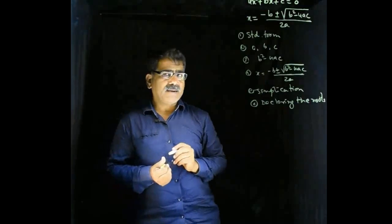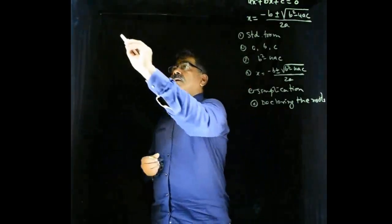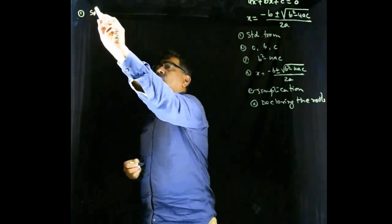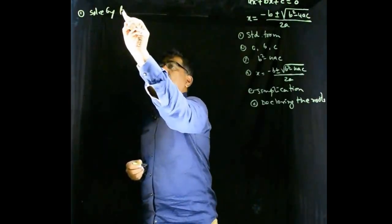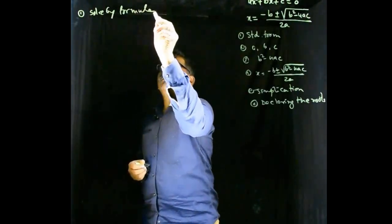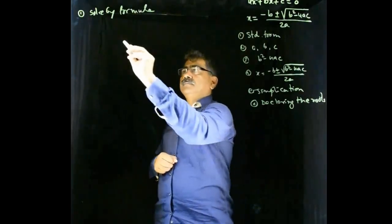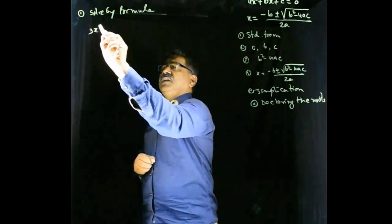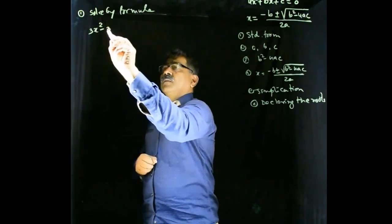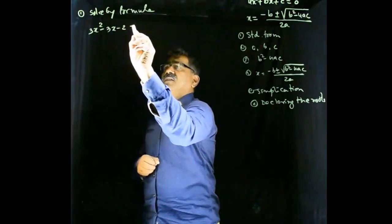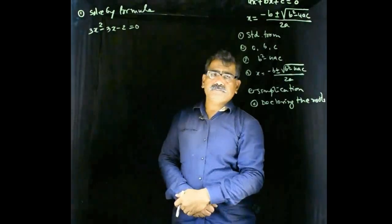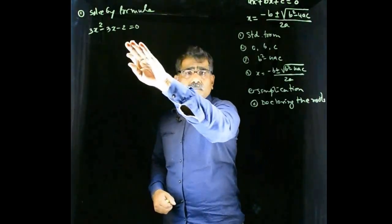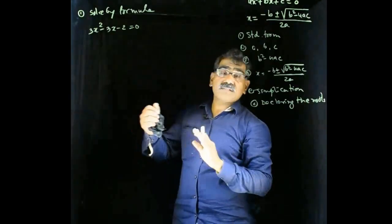Here I will take one simple example. Solve by formula: 3x square minus 3x minus 2 is equal to 0. Is it in standard form? Yes, it is in standard form.